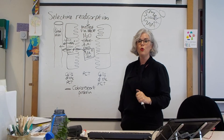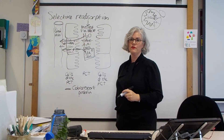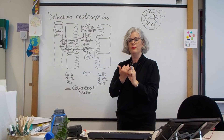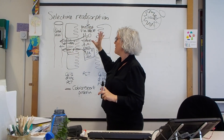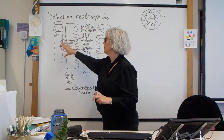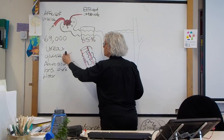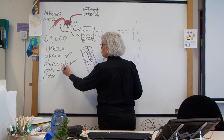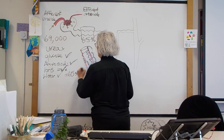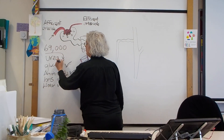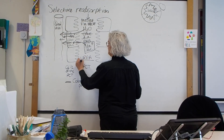So we've now selectively reabsorbed the glucose, amino acids, and some ions. We've moved those solutes out, created a water potential gradient, and so the water also moves out of the filtrate. By the time we get to the end of the proximal convoluted tubule, we will have reabsorbed the glucose, the amino acids, a lot of the ions, and about 65% of the water. What we have not reabsorbed is the urea — it stays in the filtrate.